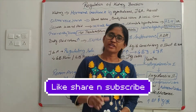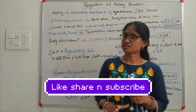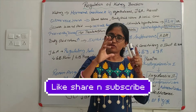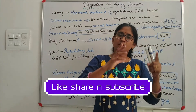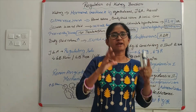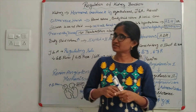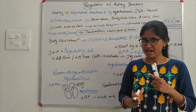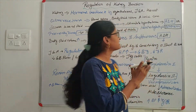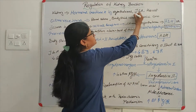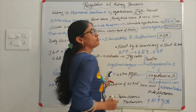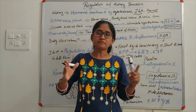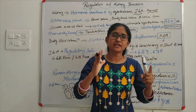Hello friends, today we will start regulation of kidney and regulation of kidney by different factors. It is affected by different factors. The first factor is hormonal feedback, the second one is juxtaglomerular apparatus, and the third one is the heart. That means your kidney is affected and regulated by these factors.